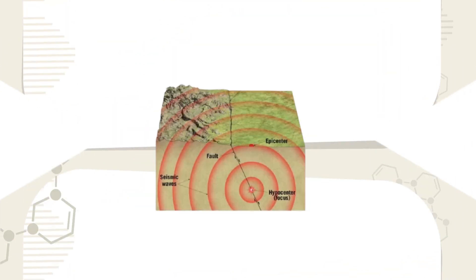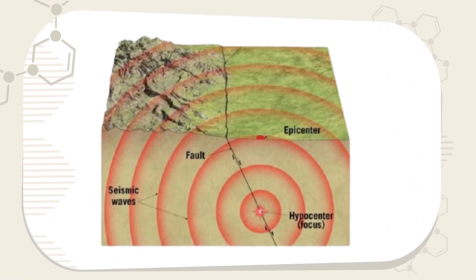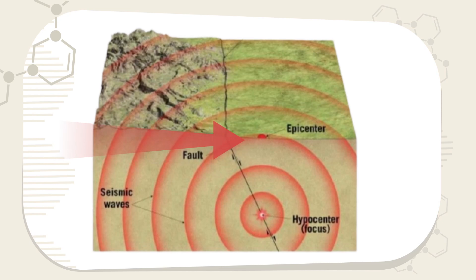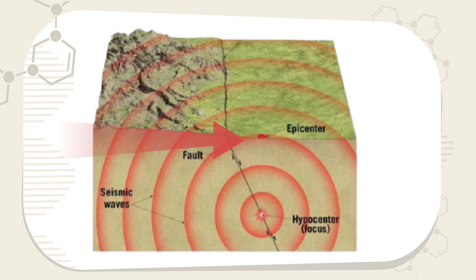The point where an earthquake rupture starts is the hypocenter. It can be directly below the surface or, conversely, at a depth of several kilometers. The point directly above the hypocenter is the epicenter. It is the point where the seismic waves reach first and most intensely.